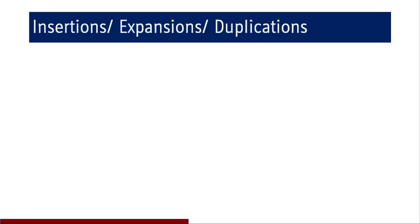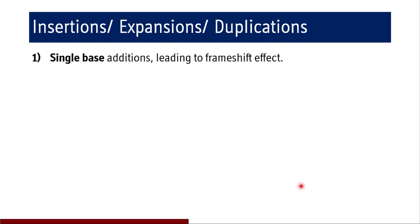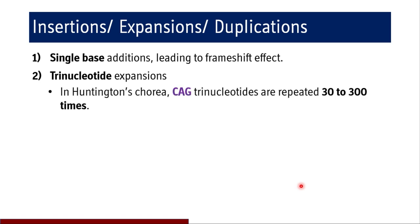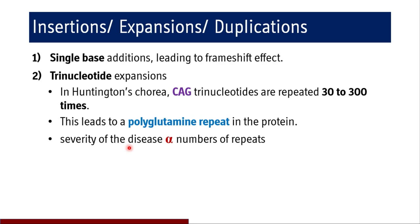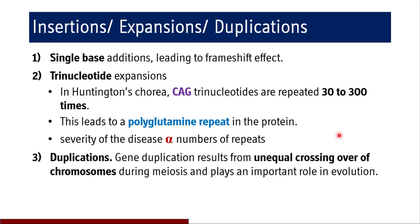Miscellaneous mutations include single base additions causing frameshift effects, and trinucleotide expansions such as in Huntington's chorea, where CAG repeats are repeated 30 to 300 times. Since CAG codes for glutamine, this leads to polyglutamine repeats in the protein. The severity of the disease is directly proportional to the number of repeats — as the number increases, severity increases. There are also gene duplications resulting from unequal crossing over of chromosomes during meiosis, which plays an important role in evolution.